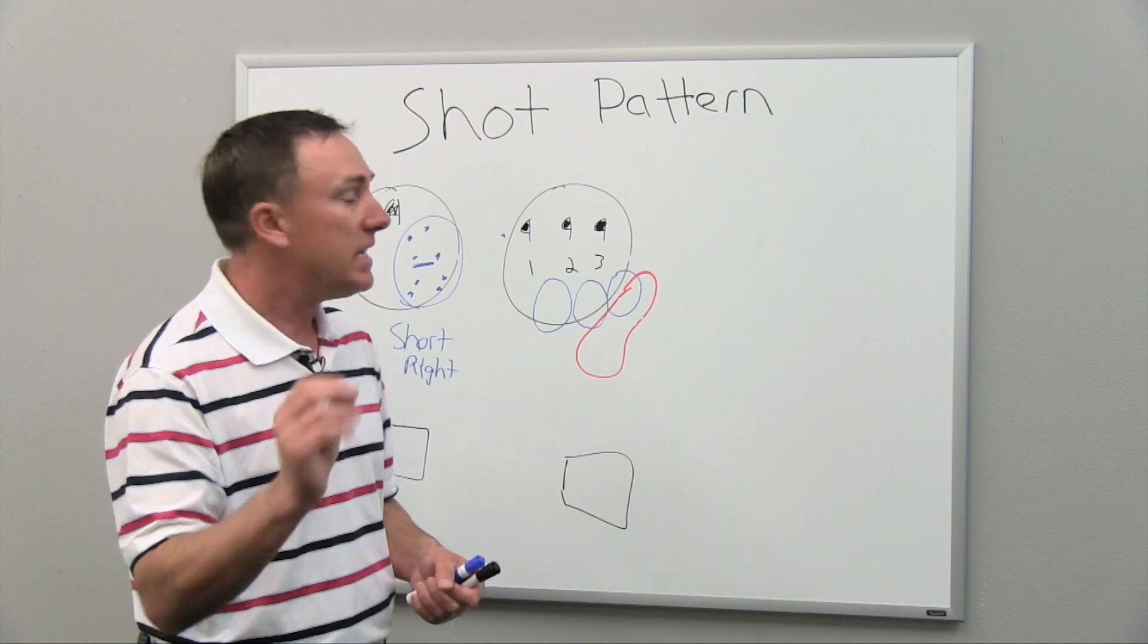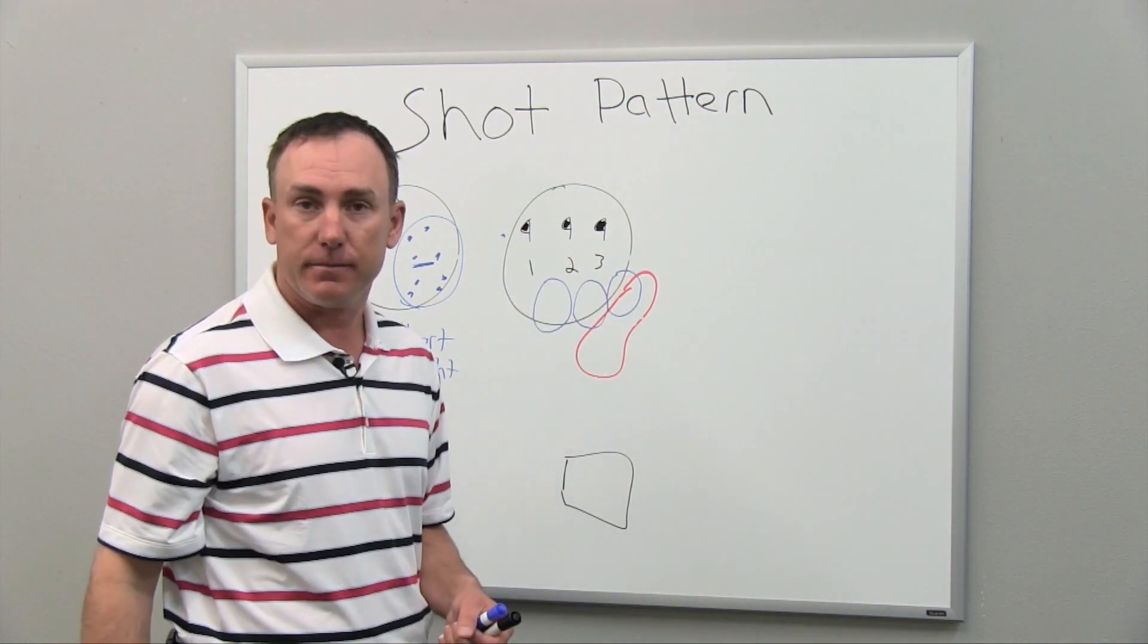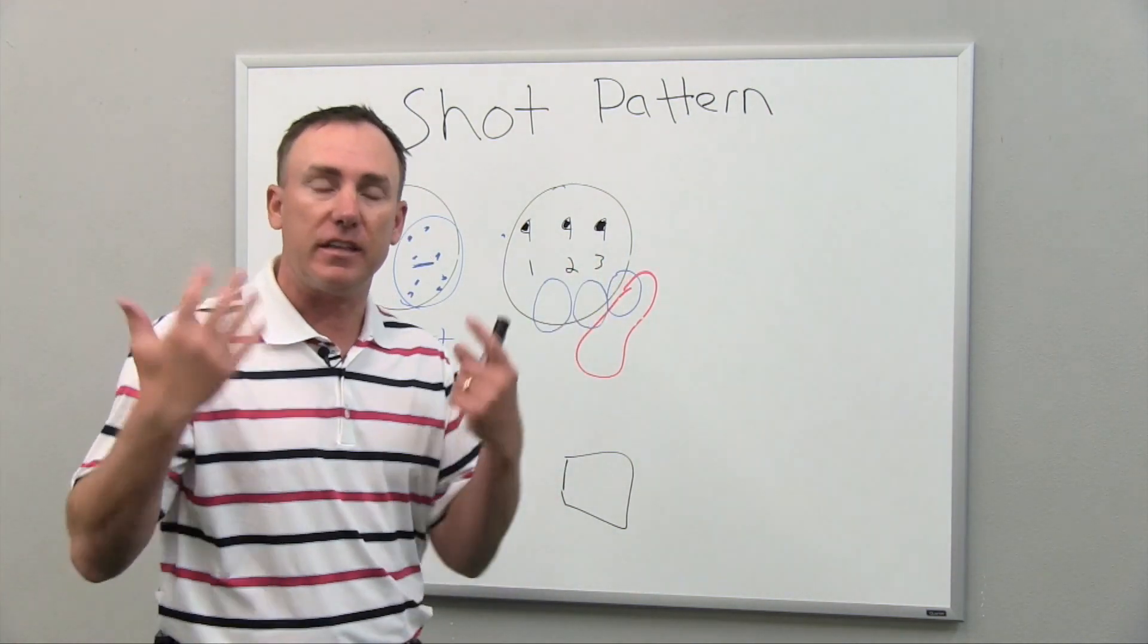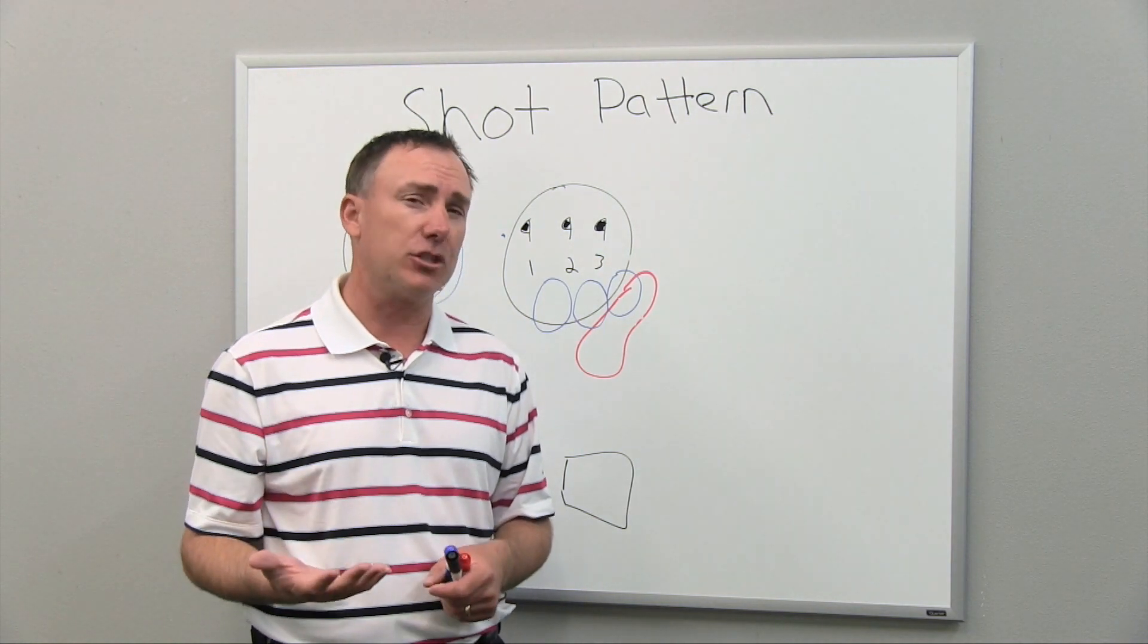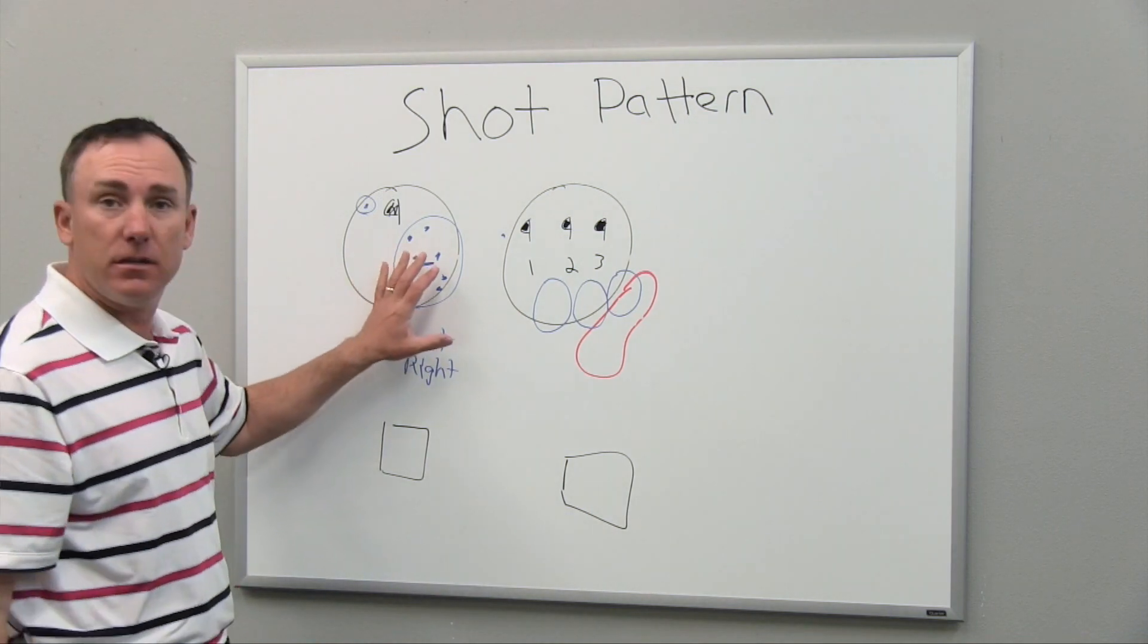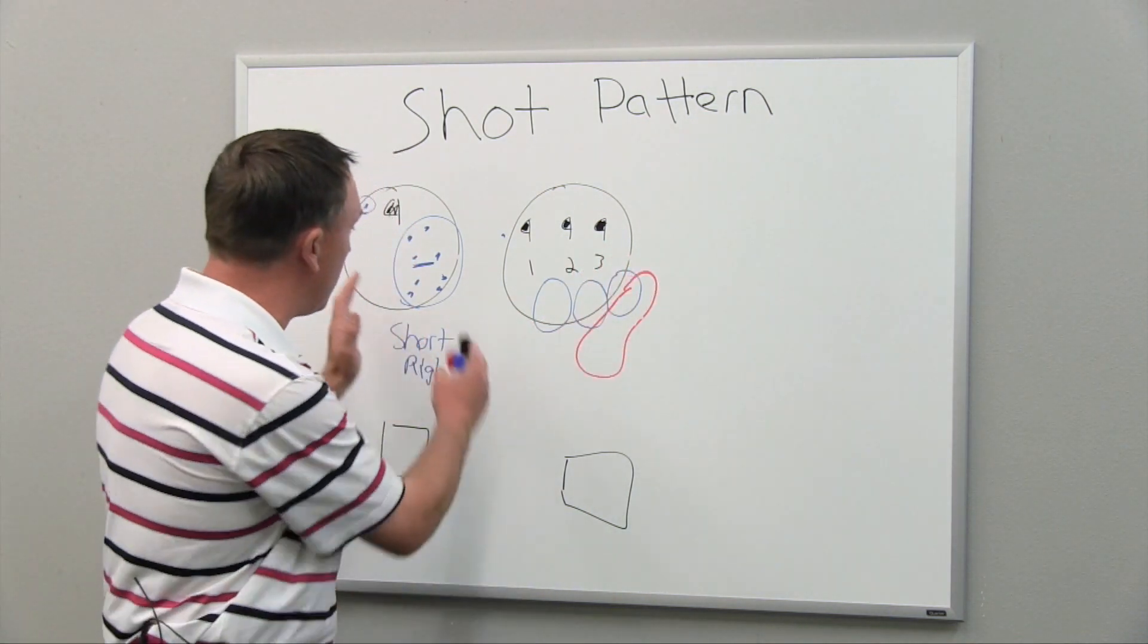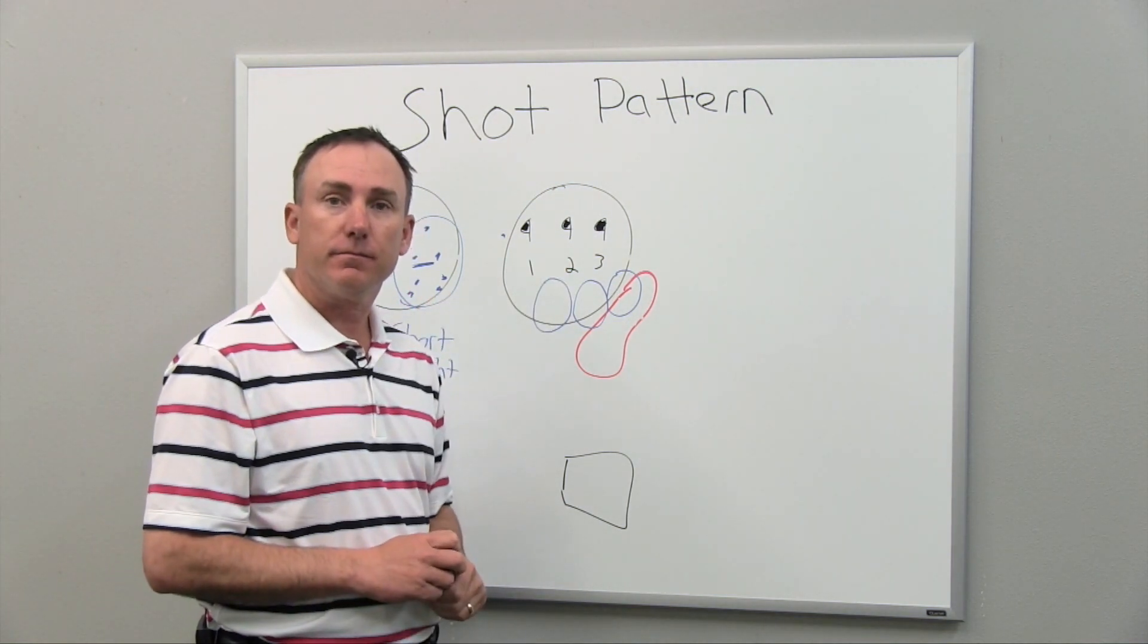This is a blow-up hole waiting to happen. Even though, this is the key here, listen to this, even though they still hit the shot well within their pattern, they're aiming right at the pin, ball goes in the bunker, they think that was a terrible shot. Was it really a terrible shot? Was it really outside their normal pattern? No, it was not. That was not a bad shot. It was well within their pattern. It was a bad target.